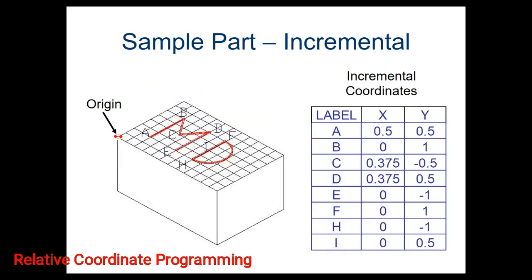The first thing we want to look at is how does that change our planning? We talked about last time that in our planning, we're going to list out all of these vertices that we are going to try to map into our cut. Before, we would start by putting out the actual coordinates for each of those points — go look on the grid and figure out where A, B, C, D, E, and F coordinates are going to be. When we do this incremental or relative coordinate system, we're going to do it a little differently. Everything we're doing is based off of where we are currently and how do we get from where we are to the next position.